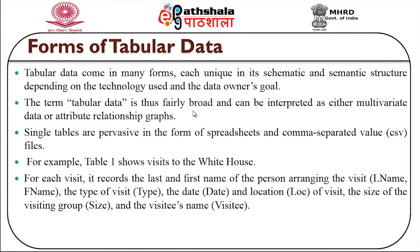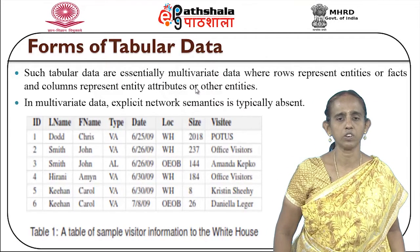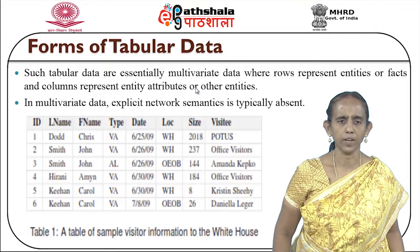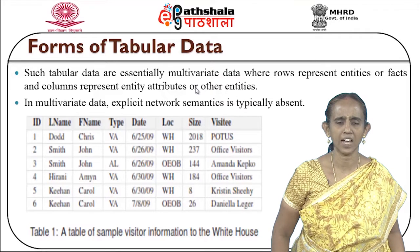Tabular data comes in many forms, each unique in its schematic and semantic structure depending on the technology used and the data owner's goals. The term tabular data is broad and can be interpreted as either multivariate data or attribute relationship graphs. Single tables are pervasive in the form of spreadsheets and comma-separated value files. For example, a table showing visits to the White House records the last and first name of the person arranging the visit, type of visit, date and location, size of the visiting group and the visitor's name. Such tabular data are essentially multivariate data where rows represent entities or facts and columns represent entity attributes.